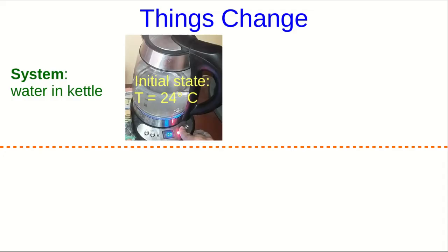Let's start to get used to some of the terminology that we'll use in this course. I'm going to define a system. A system is just a chunk of the world that we're going to examine or think about. If that seems rather vague, don't worry about it — I'll define it in more detail later in the course. My system is going to be the water in the kettle, and it has a state. The state is the set of all measurable quantities that describe the system.